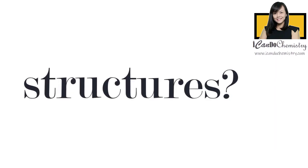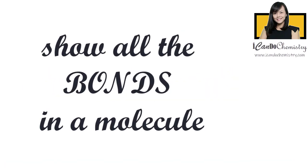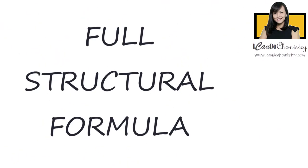Now, how do we draw the structures of alkenes? When we show all the bonds between the atoms in a molecule, we are writing down the full structural formula of the organic compound.